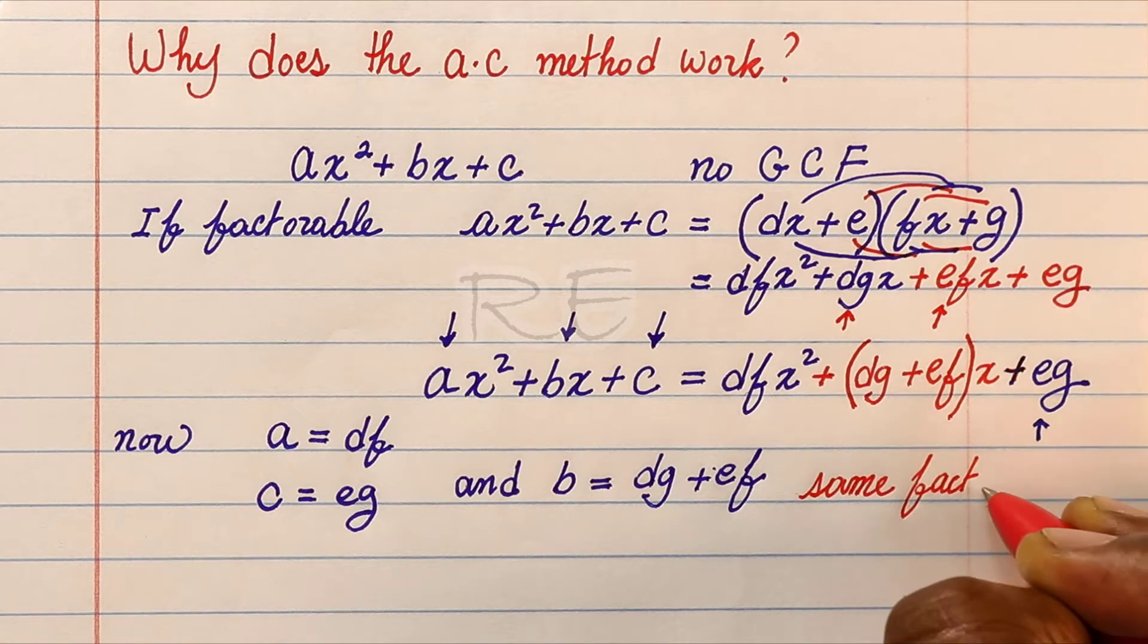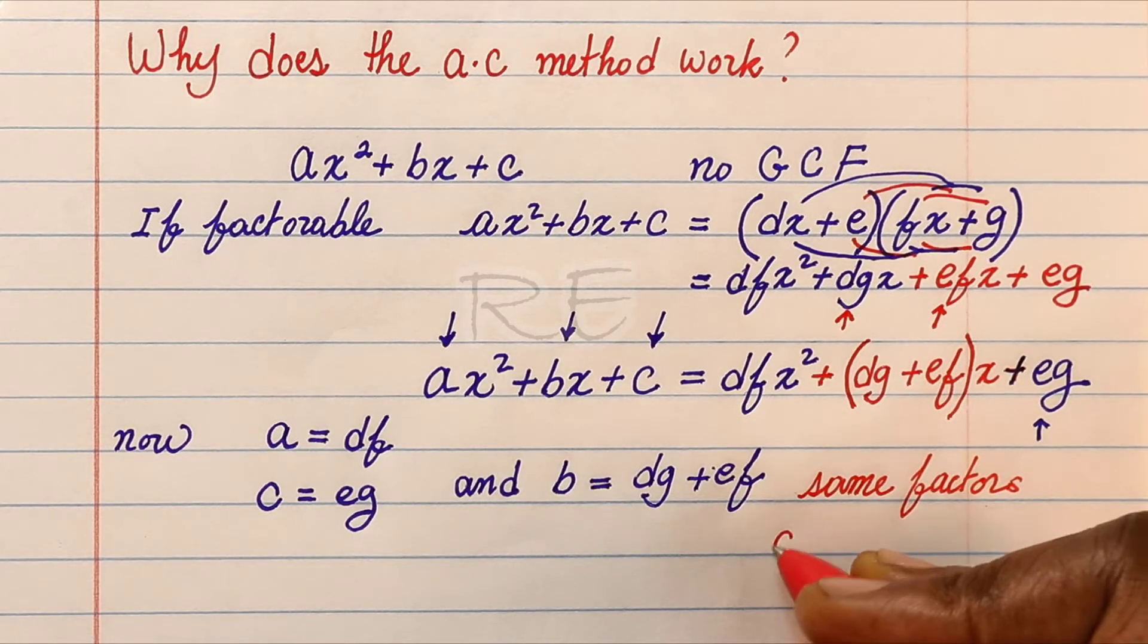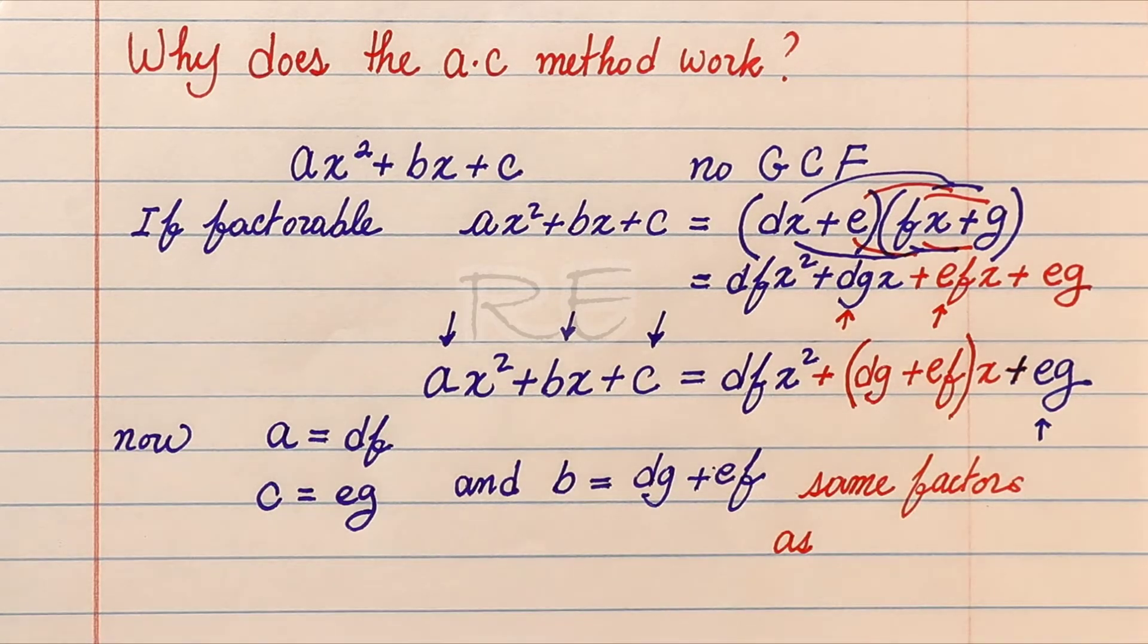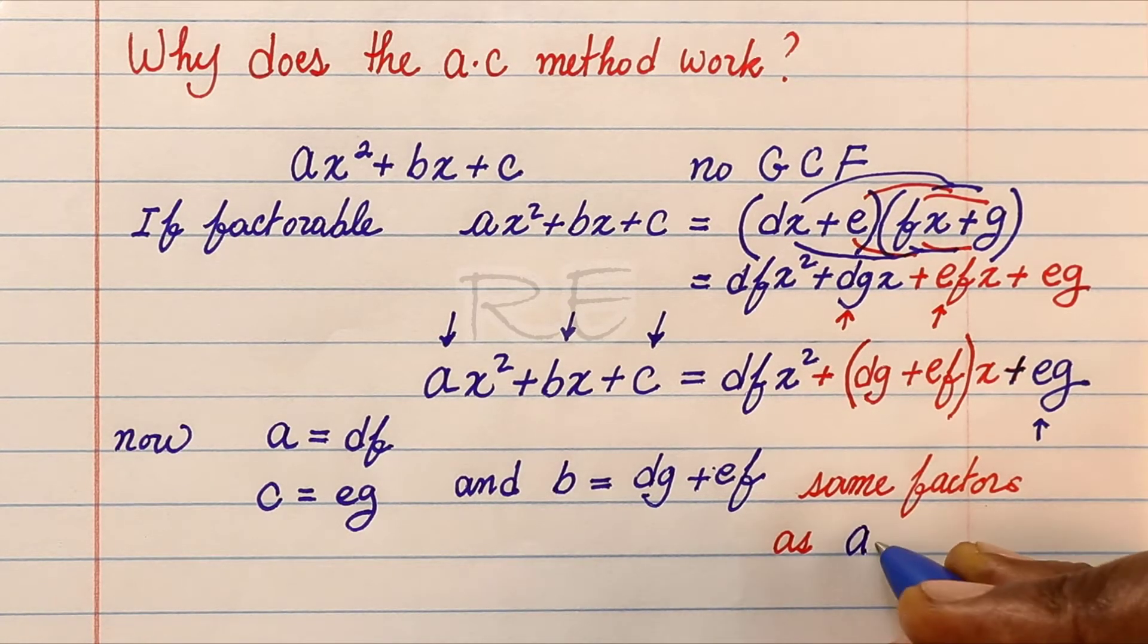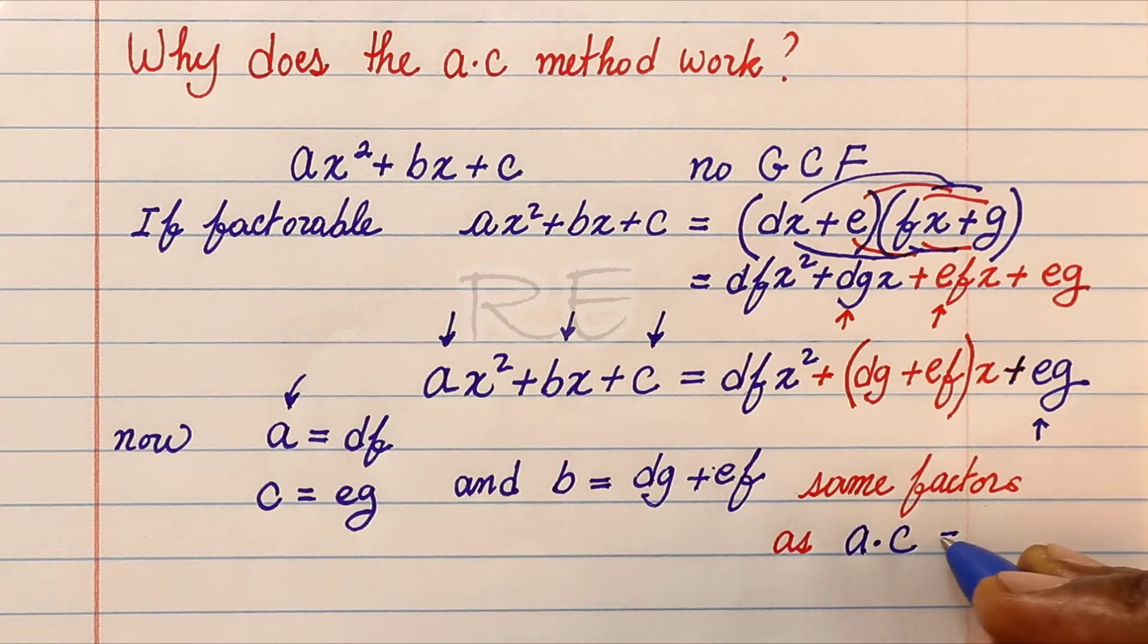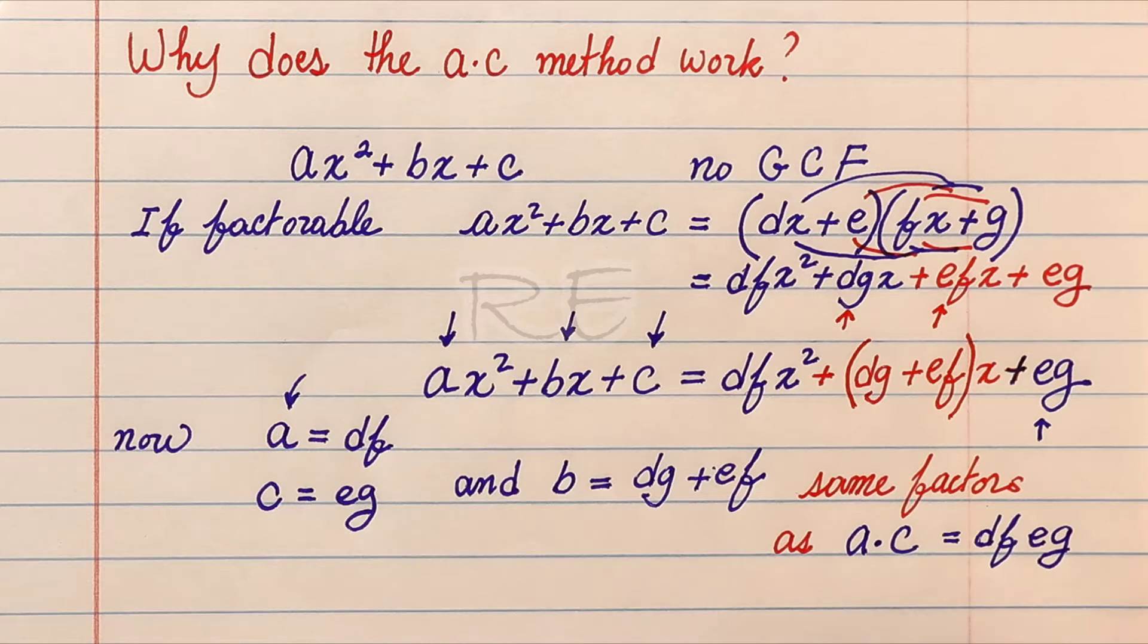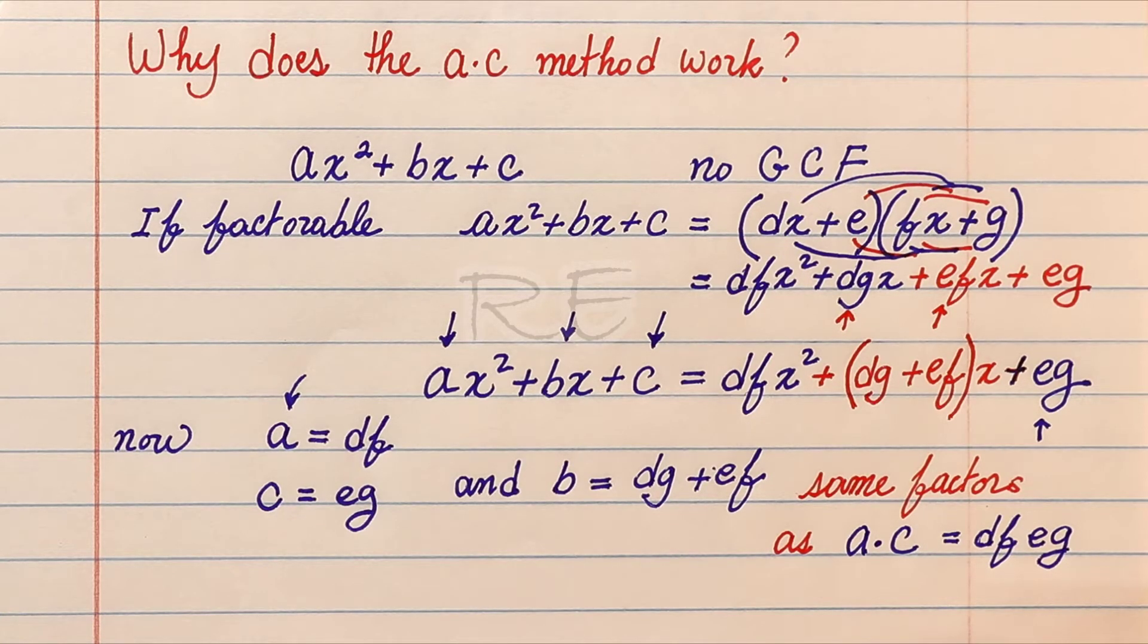Those factors are the same as the factors of ac. Notice when you multiply a by c, you get dfeg.